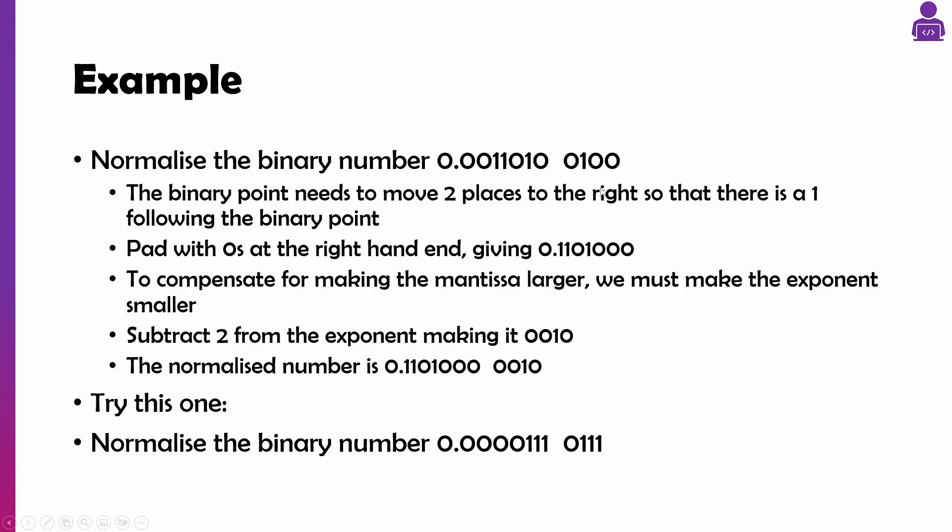Now that mantissa is now fine, but the exponent is four. Well if you do that four, it means it's going to be over here somewhere and that number is not going to be correct. So we have to take those two numbers,